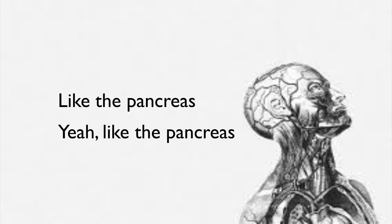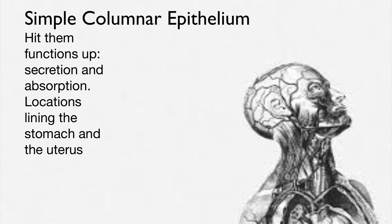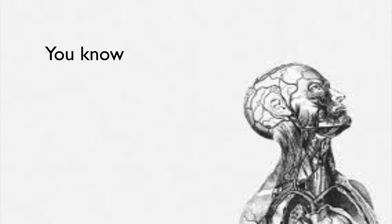Simple columnar epithelium — functions are secretion and absorption. Locations include the lining of the stomach and the uterus.